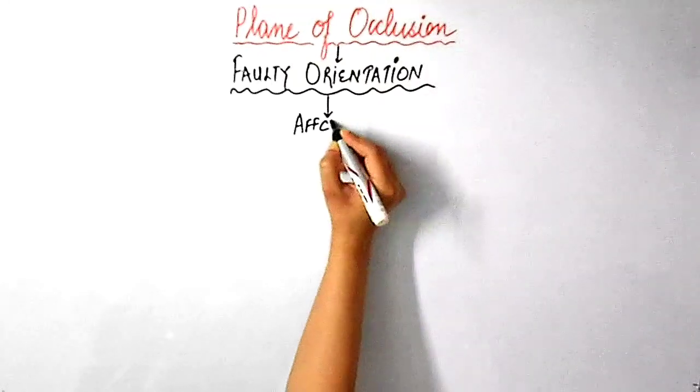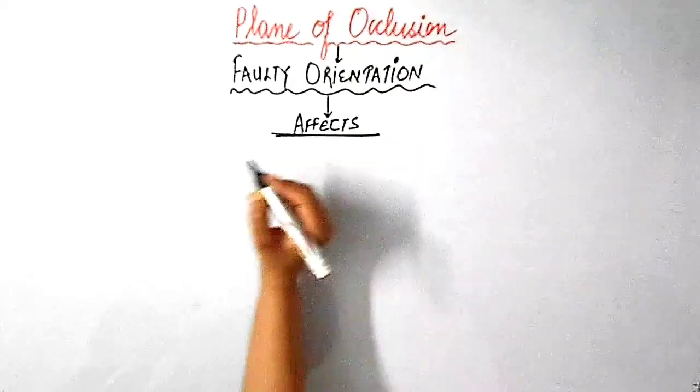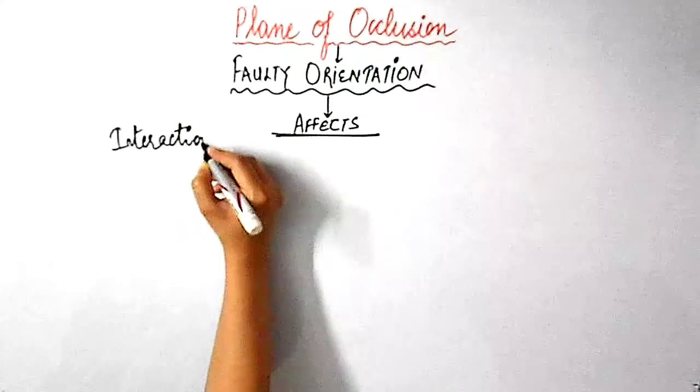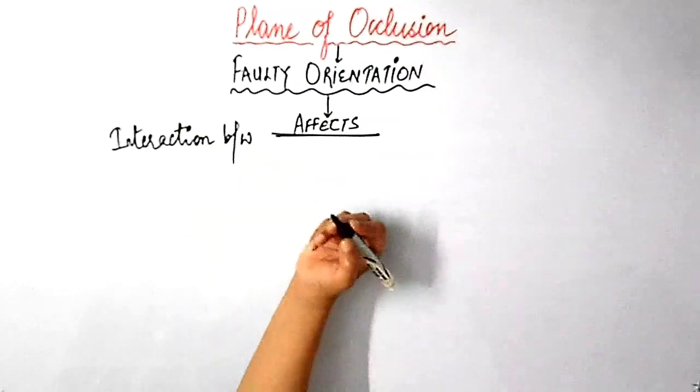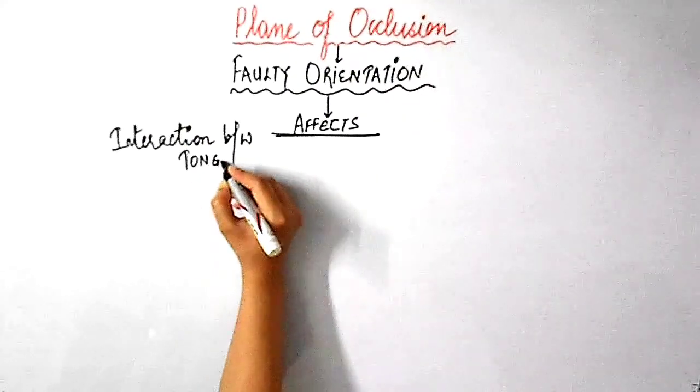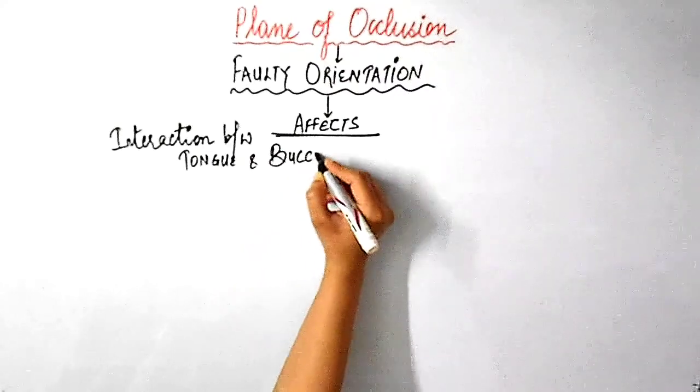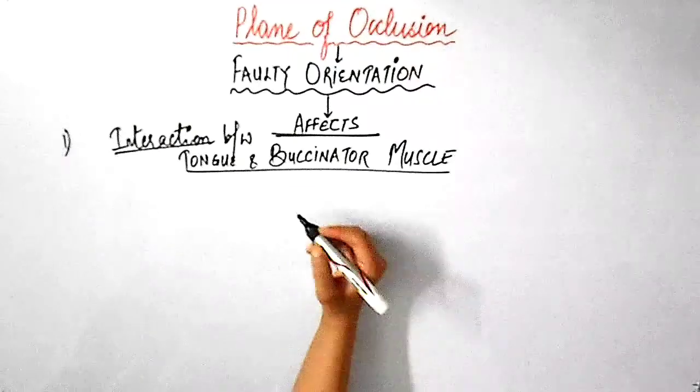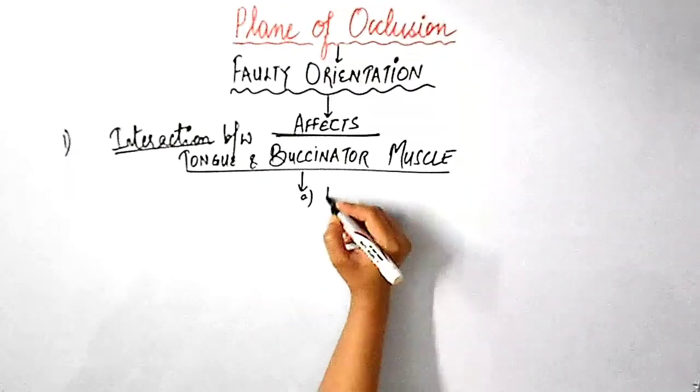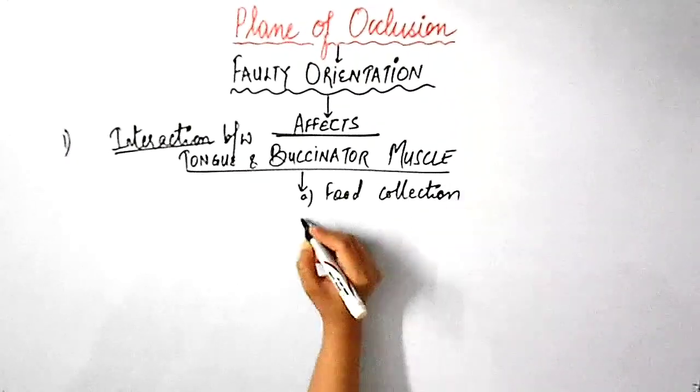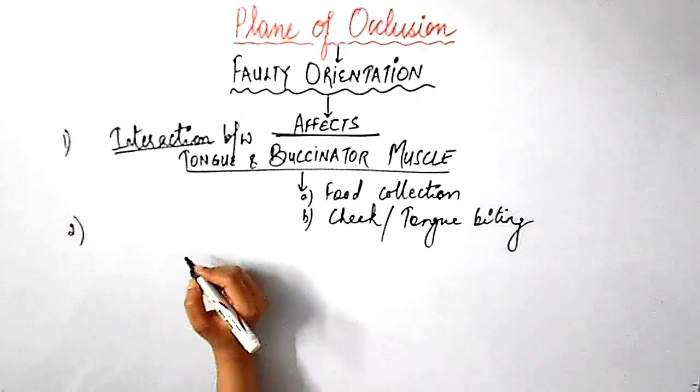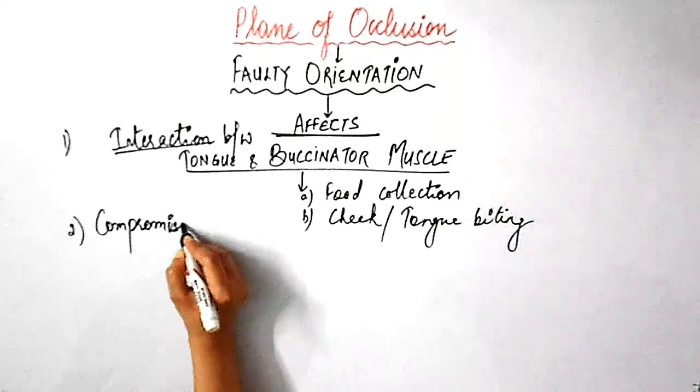Whereas, on the other hand, faulty orientation of the occlusal plane, either in fixed or removable prosthesis, will affect the interaction between the tongue and buccinator muscle and this will further result in food accumulation in the sulcus. And cheek biting or tongue biting can also be seen and it can also result in a compromise with the aesthetics and the phonetics.